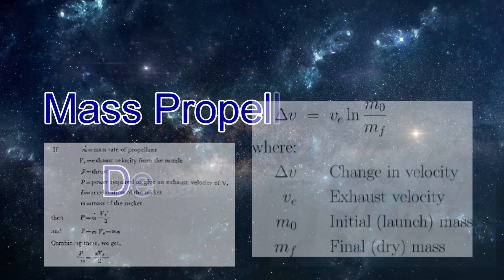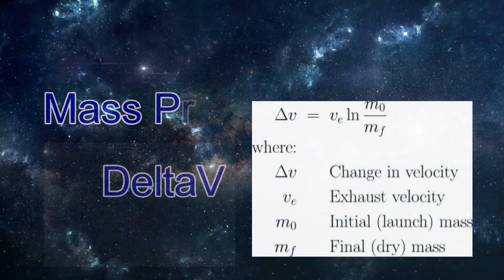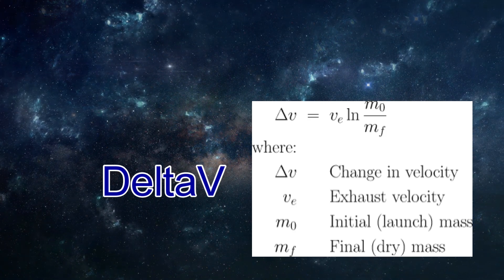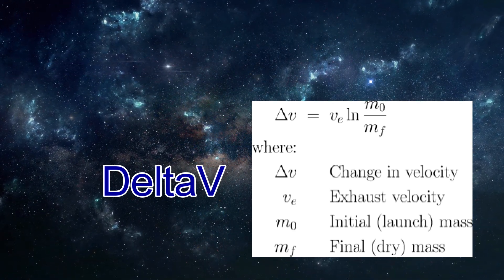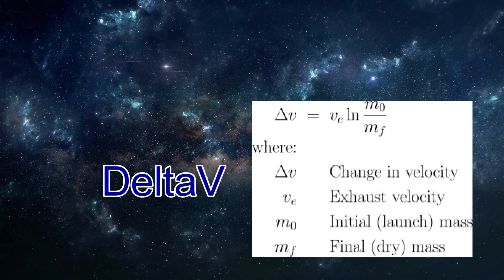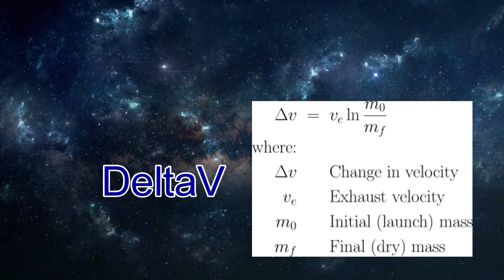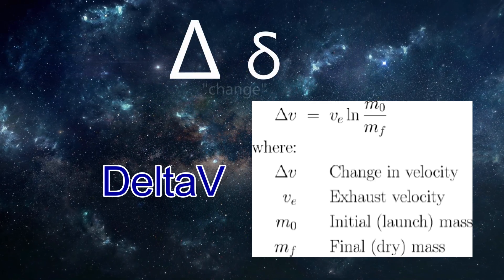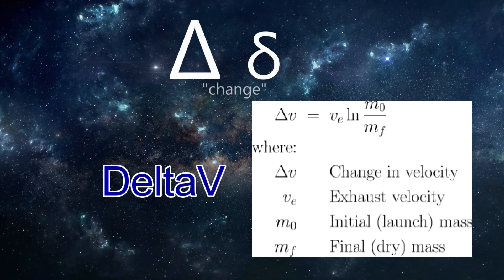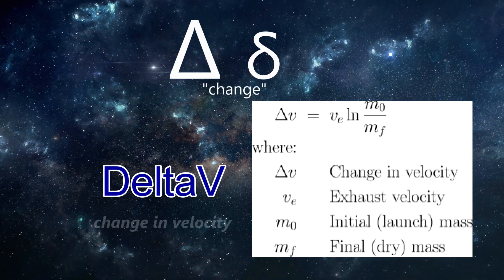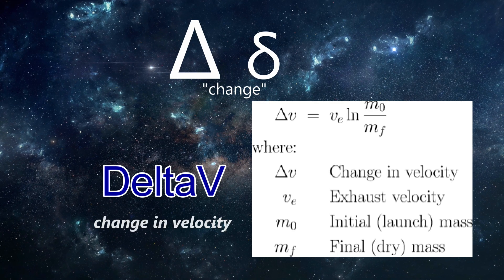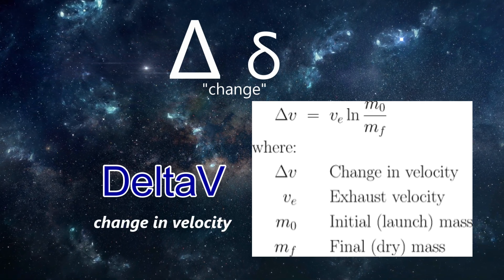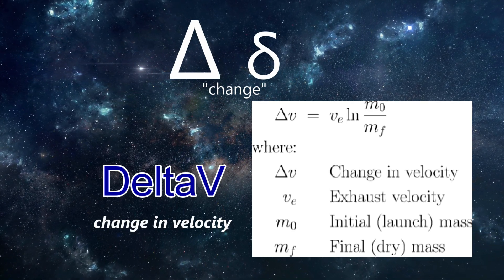Now let's look at delta V. Delta V is a very important concept when it comes to understanding spaceflight. A delta in physics usually means change, so when you hear delta V, think of change in velocity. In this case, we are talking about the total change in velocity.